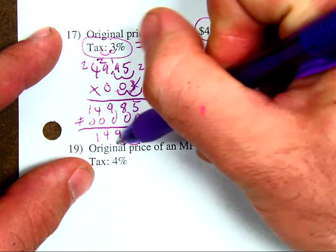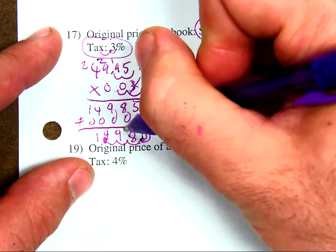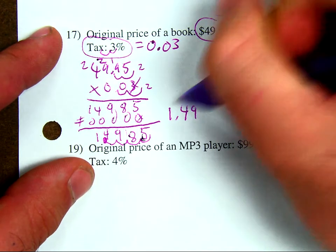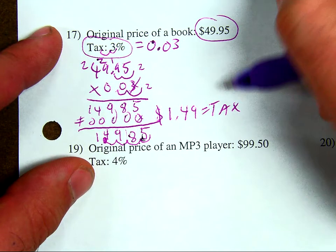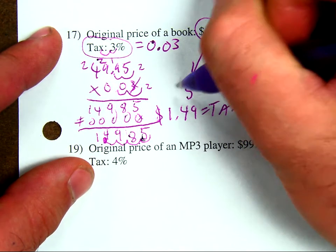1, 2, 3, 4. I can cut it off right here and say I have $1.49 equals my tax. So, that plus $49.95.